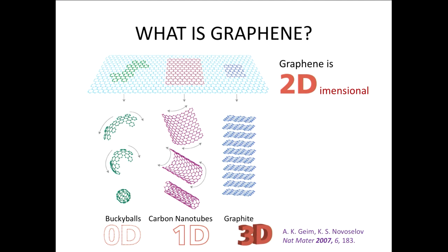The most important thing I'd like you to take away from my talk today is to understand what a two-dimensional material is, which is what graphene is. Everything in the world around us is three-dimensional — it has a length, a width, and a height. Graphene, on the other hand, is a two-dimensional material. This is a molecular model of graphene. The black dots are carbon atoms connected together in a hexagonal, chicken wire-like structure. A single sheet of carbon atoms like this is called graphene.